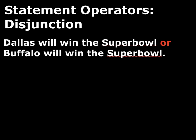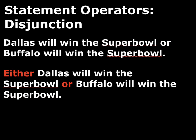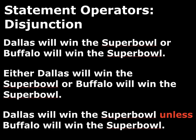Let's get into disjunctions first. There are a number of ways to express disjunction in English. A standard one is to use 'or': 'Dallas will win the Super Bowl or Buffalo will win the Super Bowl.' Sometimes you can use 'either/or': 'Either Dallas will win the Super Bowl or Buffalo will win.' You can also use 'unless': 'Dallas will win the Super Bowl unless Buffalo will win it.' Unless is a little tricky — in fact, all of these operators are tricky.